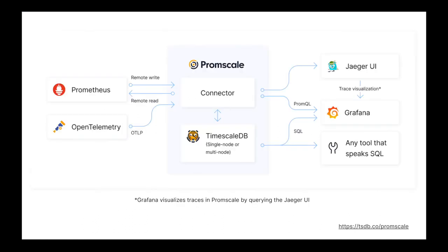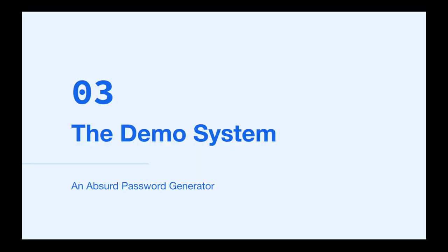This is just a high-level architecture where you see PromScale using TimescaleDB to store the data, and integrations with Prometheus, OpenTelemetry, Grafana, Jaeger, and any tool that speaks SQL. TimescaleDB is PostgreSQL with time series superpowers — technically it's a PostgreSQL extension, and so it also gets access to all the capabilities PostgreSQL provides. Enough of an introduction — let's start playing with OpenTelemetry, PromScale, Grafana, and SQL.